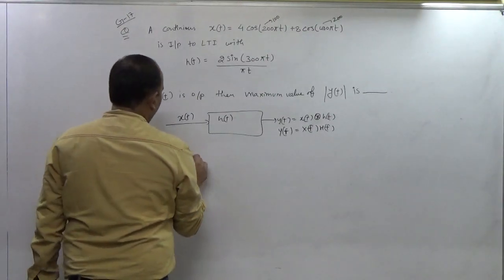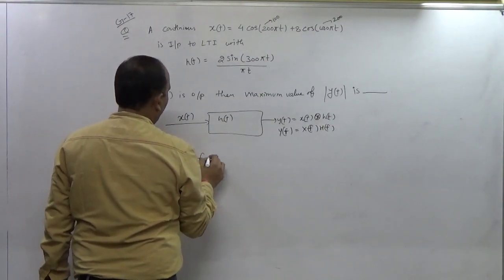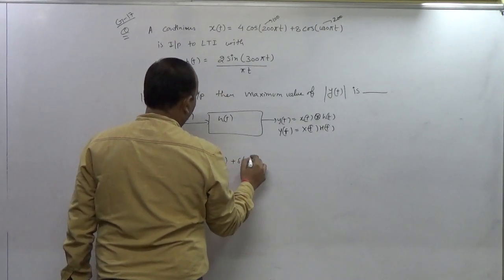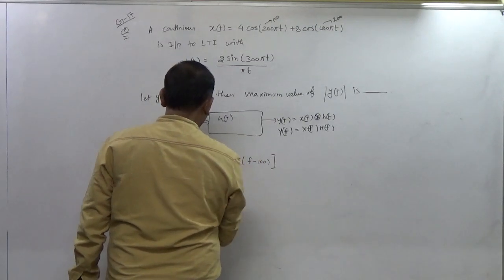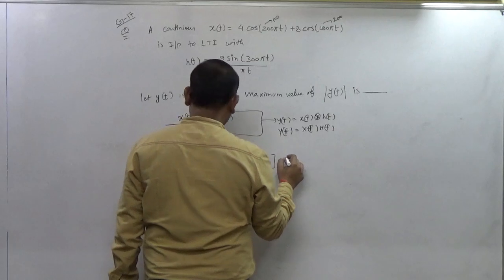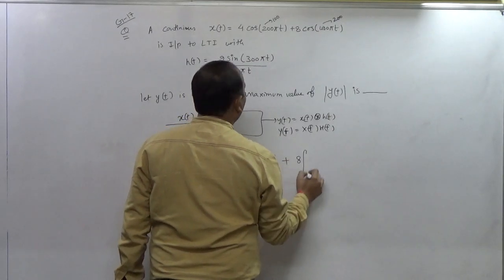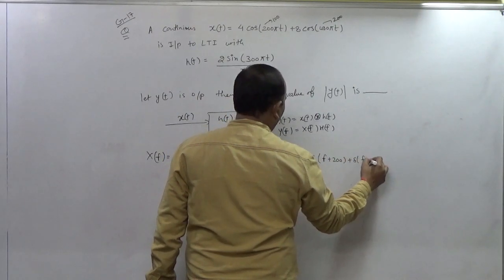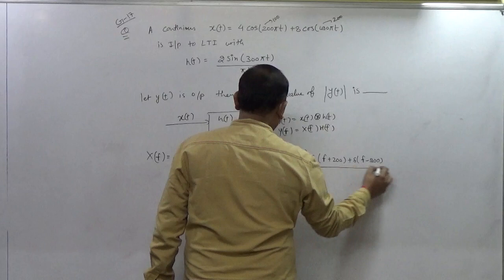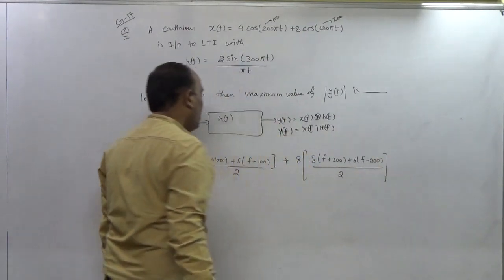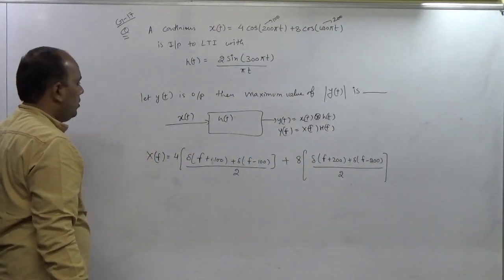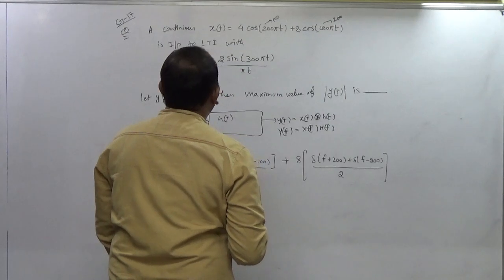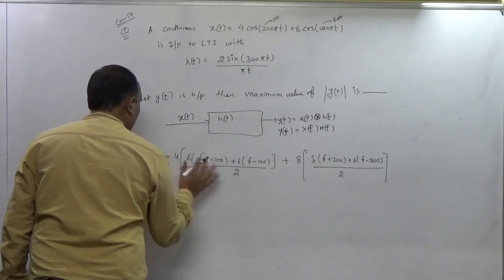Now we can write it as δ(f+100) plus δ(f-100) divided by 2, plus 8δ(f+200) plus δ(f-200) divided by 2. So when we draw the diagram of 100 and 200, this is the diagram and this is the equation.